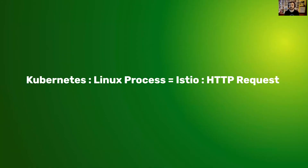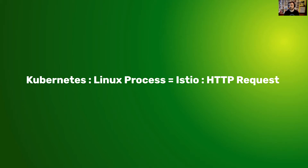Kubernetes stands to a Linux process what Istio is to an HTTP request. The same way Kubernetes orchestrates Linux processes into containers you can run on thousands of machines, Istio orchestrates HTTP requests. Kubernetes doesn't really care about your HTTP request — it has services and ingresses with some networking capabilities, but it doesn't have the ability to understand HTTP. Istio has APIs specific for protocols: HTTP, HTTPS, gRPC, and even application-specific protocols like Redis, MySQL, and Kafka.